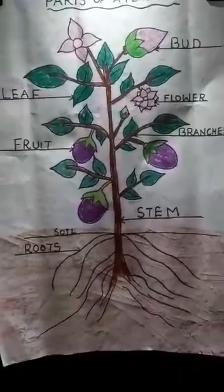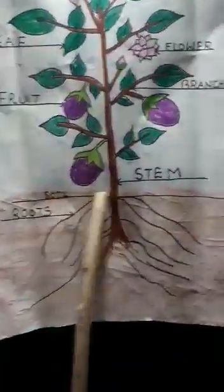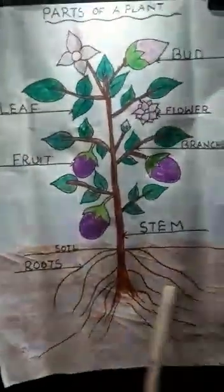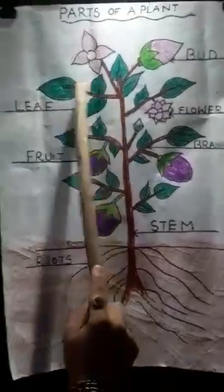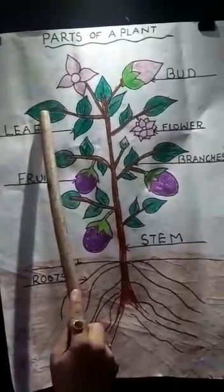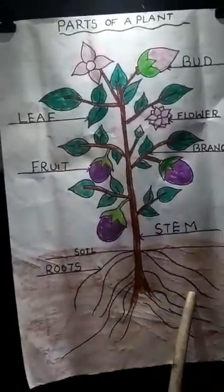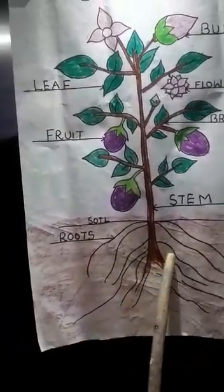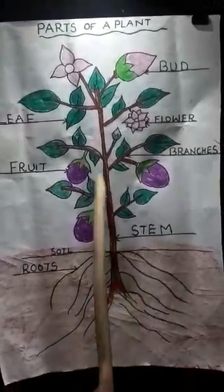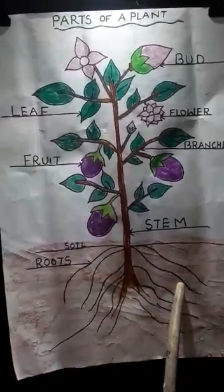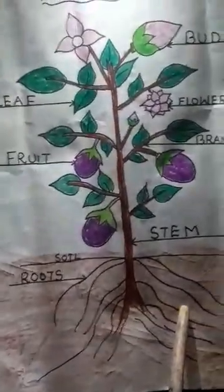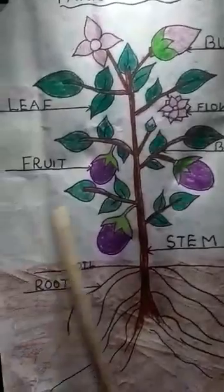Now we come to roots. Roots have two major functions. First, they absorb water, minerals, and nutrients from the soil and give them to the leaves for preparation of food. Second, roots hold the plant firmly in the soil. Without roots, you won't see plants standing firmly in the soil. So the stem makes the plant stand upright, and the roots hold it firmly in the soil.